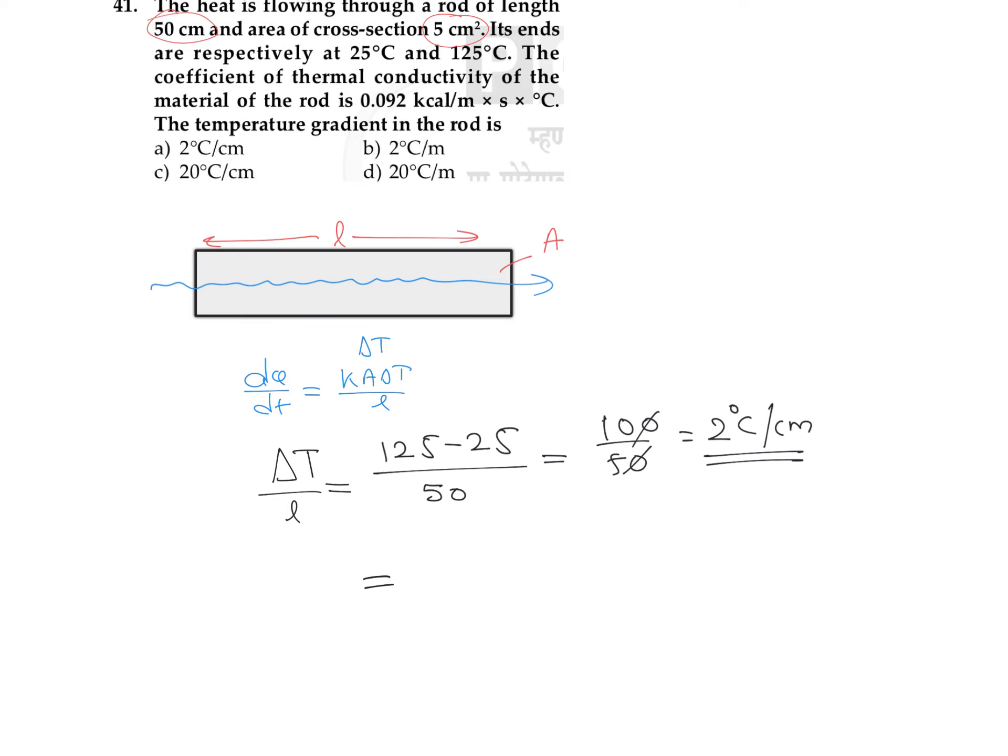If you'd like to write the answer in terms of meters, the difference in temperature is 100 divided by distance 0.5 meters. If you're writing in meters, you get the answer as 200 degrees Celsius difference for length of one meter.